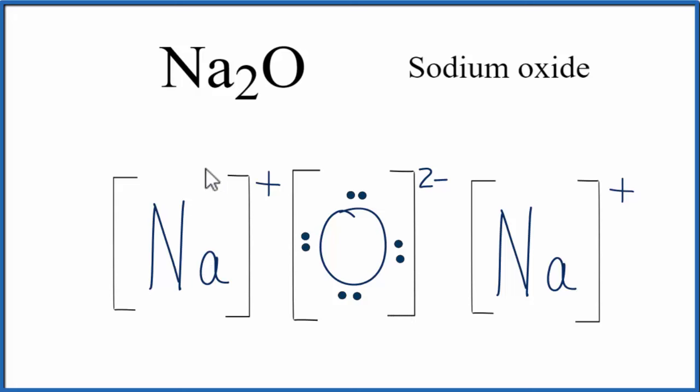Do note, however, this is what we call a formula unit. We would find Na2O in a crystal, a regularly repeating pattern of formula units. This is Dr. B with the Lewis structure for Na2O, sodium oxide. Thanks for watching.